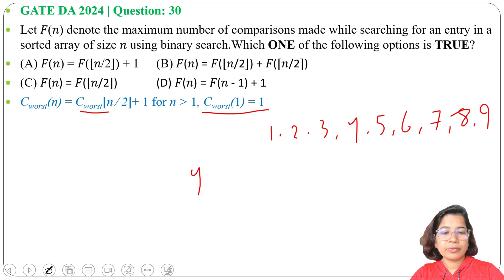So first we will compare with the middle element. That is 5. Is 5 equals to 4? No, it is less than. So next time we will compare with this value.